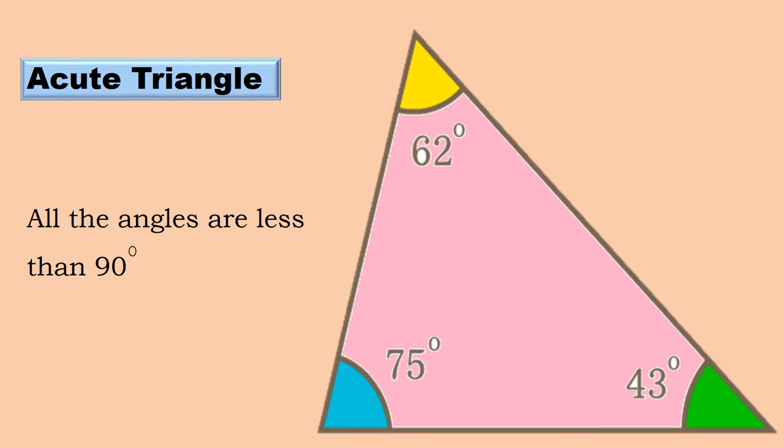Acute Triangle. All the angles on the Acute Triangle are less than 90 degrees.